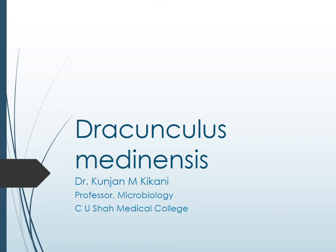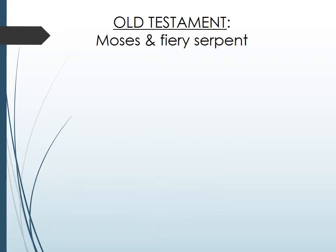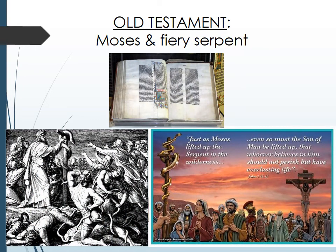Hello, welcome to the e-learning class of Parasitology. Today we are starting the session of Tissue Nematode, and first in this is Dracunculus medinensis, which is also known as Guinea worm. You must have heard the story depicted in the Bible, that people in Israel were having a problem of fiery serpents — a snake-like creature emerging out of the body, which was removed by Moses. It is popularly believed that this has a relation with today's worm, the Guinea worm.